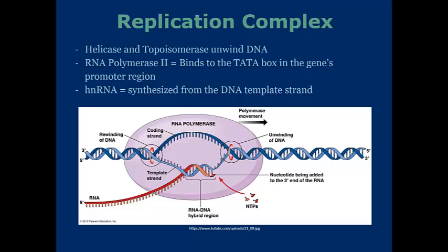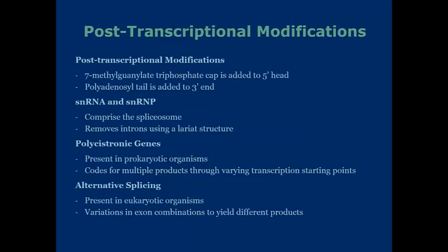HnRNA is what is synthesized from this DNA template. After transcription, there are several modifications before the hnRNA can go out into the cytoplasm for translation. For starters, there has to be a 7-methylguanylate triphosphate cap added to the 5' head, or simply a 5' cap, and a polyadenyl tail, or a poly-A tail, added to the 3' end. This is used as a tag to signify to the nucleus that an hnRNA is ready for export.